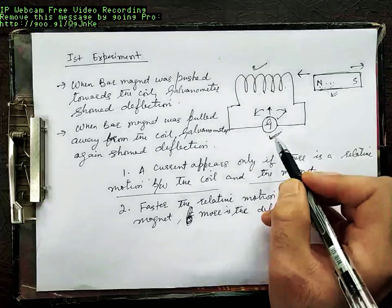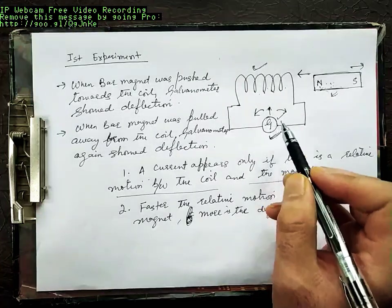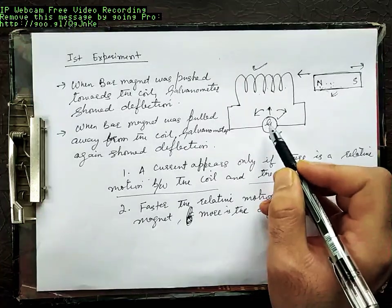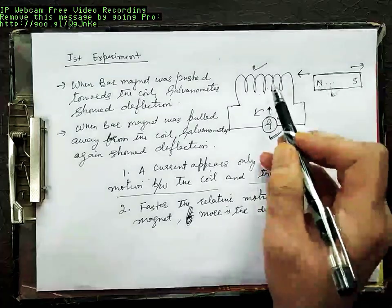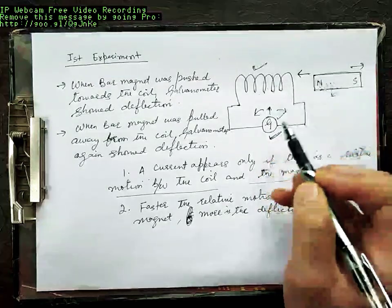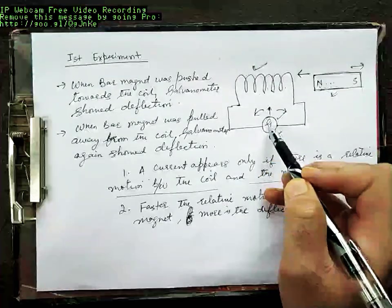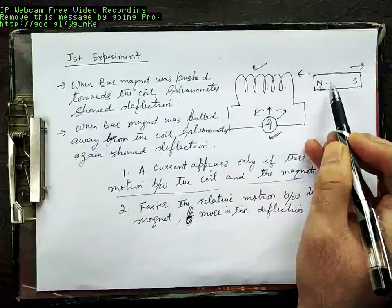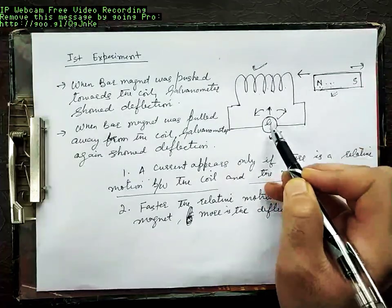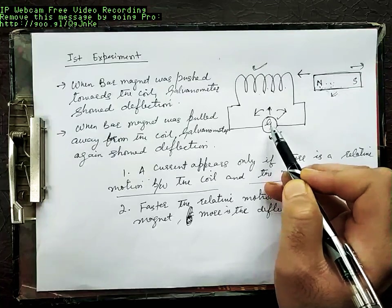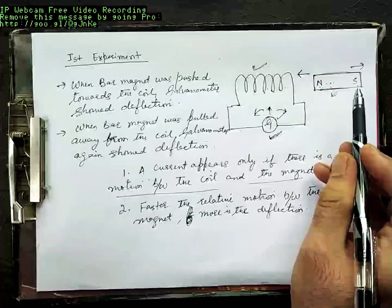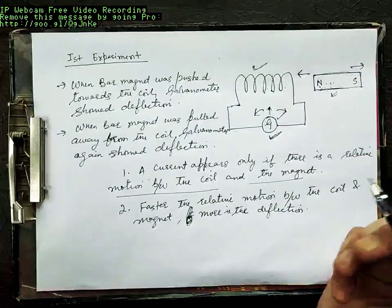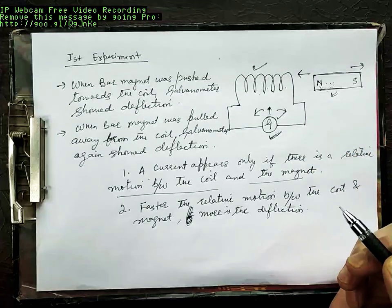The deflection in this galvanometer was directly proportional to the relative motion between the two. Faster the relative motion, more the current induced. Slower or less the relative motion, less the current induced. And if there was zero relative motion between the two, then zero deflection — the galvanometer does not show any deflection in that case.